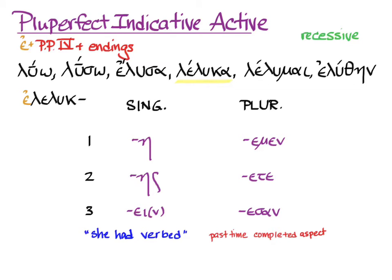Even though these are new endings, you can see some familiar things, like the sigma at the end of the second person singular, and the men as the person marker for 'we,' and ta as the person marker for 'y'all.' They just go with different characteristic vowels in the endings of the Pluperfect.